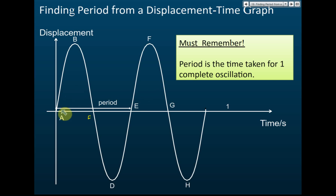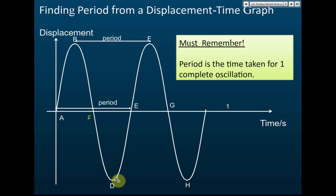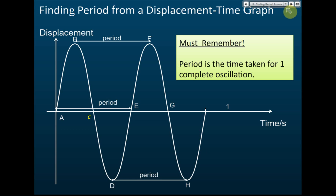If you don't want to start from point a, you can start from the maximum point b — then the complete oscillation goes from b through c, d, e, to f, and the time taken from b to f is the period. Or if you start from d, the complete oscillation goes from d through e, f, g, to h, and the time taken from d to h is the period. That is how we find period from a displacement-time graph.